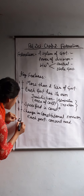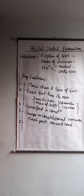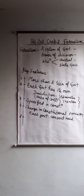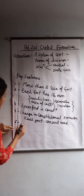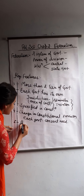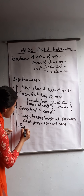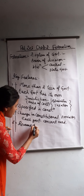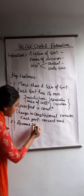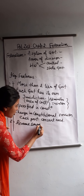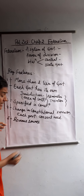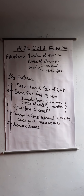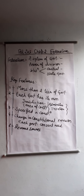The fifth point is revenue sources. Where will revenue sources come from? The central government gets revenue from the center, and the state government gets revenue from the state.